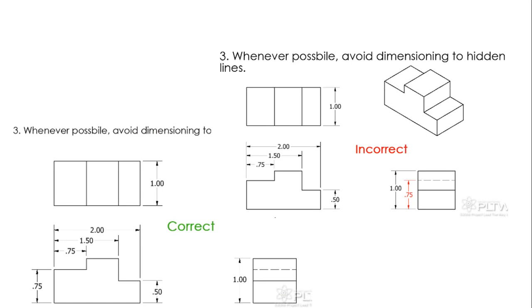Avoid dimensioning to a hidden line. So I've got here's the multi view, here's kind of correct. Incorrect here is putting a 0.75 here showing to that hidden line which is this over here. Yeah, don't put it on hidden line.